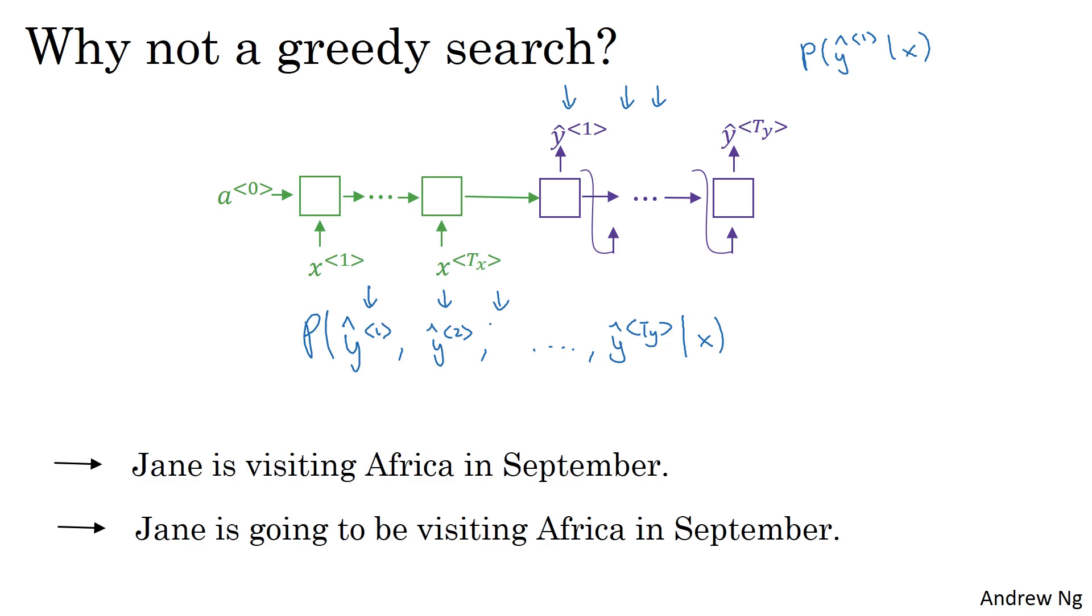To illustrate that, let's consider following two translations. The first one is a better translation. So hopefully, in our machine translation model, it will say that P of Y given X is higher for the first sentence. It's just a better, more succinct translation of the French input. And the second one is not a bad translation, but it's just more verbose, it has more unnecessary words.